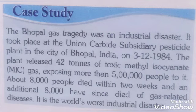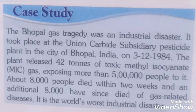We call it the Bhopal Gas Tragedy. It was an industrial disaster that took place at the Union Carbide subsidiary pesticide plant in the city of Bhopal, India, on 3rd December 1984. Pesticides are chemicals used to kill pests. This was a pesticide manufacturing industry located in Bhopal, and the tragedy happened on 3rd December 1984.